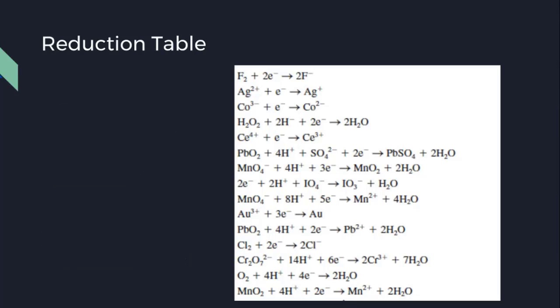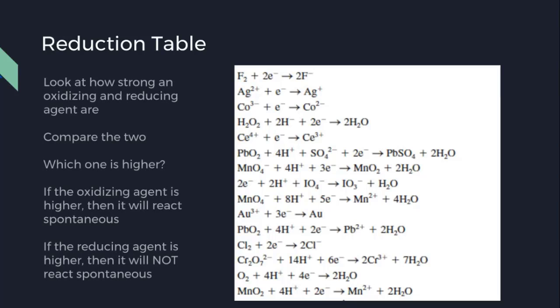To predict whether a spontaneous redox reaction will occur, we have to look at the oxidizing and reducing agents. After you find them, you compare the two and see which one is higher.